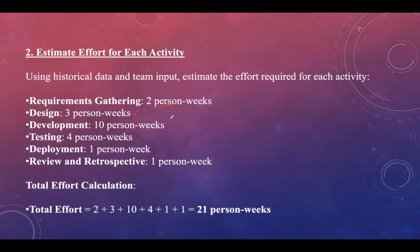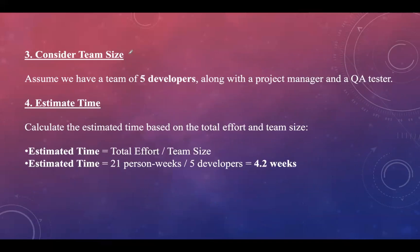Continuing the effort estimation: testing is 4 person-weeks, deployment is 1 person-week, and review and retrospective is 1 person-week. Adding all these values gives a total effort of 21 person-weeks, indicating a single person working full time for 21 weeks. With a team of 5 developers along with a project manager and QA tester, the estimated time is total effort divided by team size: 21 person-weeks divided by 5 equals 4.2 weeks.